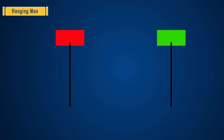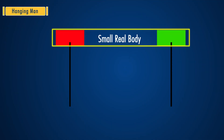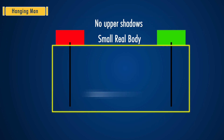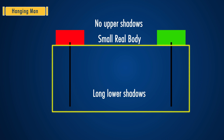This candlestick chart pattern has a small real body, which means that the distance between the opening and the closing price is very less. There is no upper shadow, and the lower shadow is twice the length of its body.